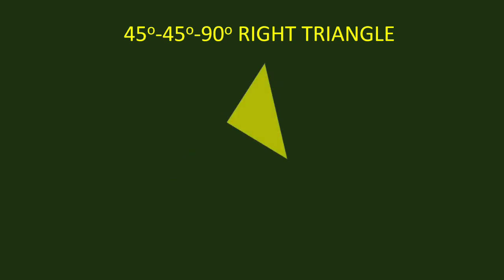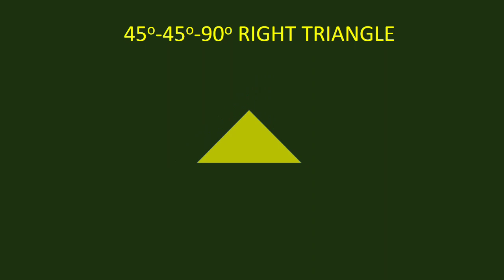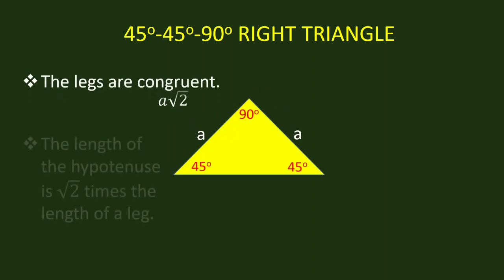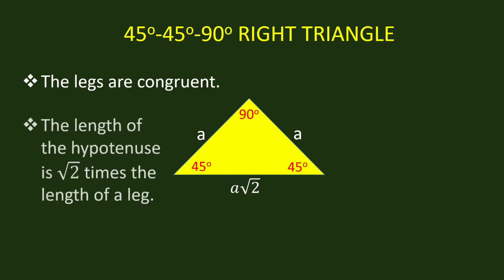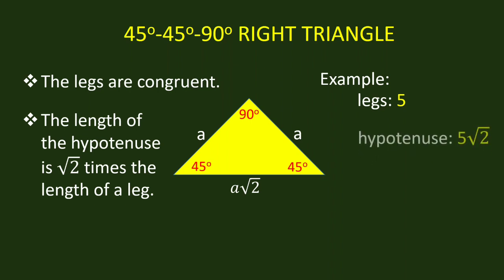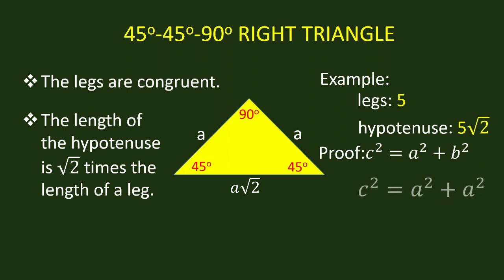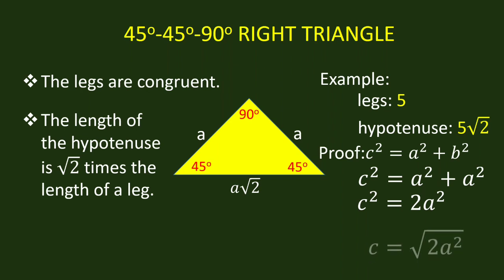Our next special right triangle is the 45-degree, 45-degree, and 90-degree right triangle. In this special right triangle, the legs are congruent. The length of the hypotenuse is square root of 2 times the length of a leg. For example, if the leg is 5, the hypotenuse is 5 square root of 2. We can prove this using the Pythagorean theorem: C squared equals A squared plus B squared. Since A and B are equal, we substitute B with A, and simplifying gives C equals A square root of 2.